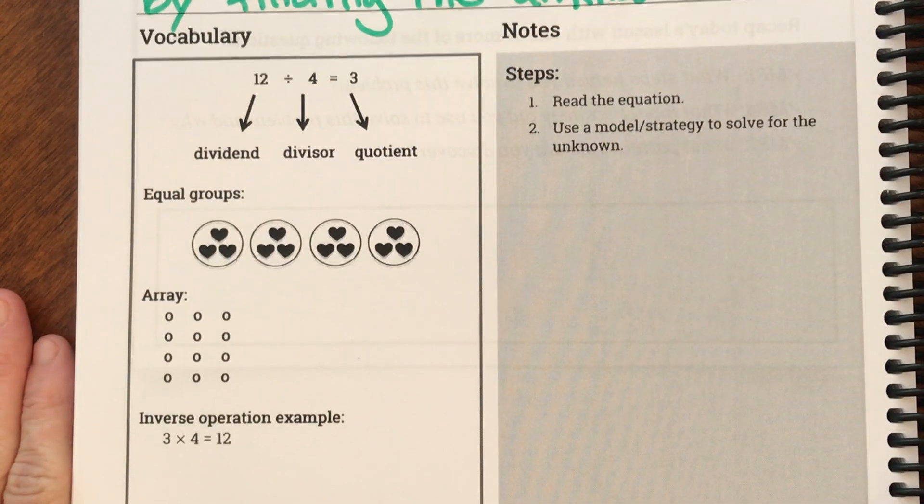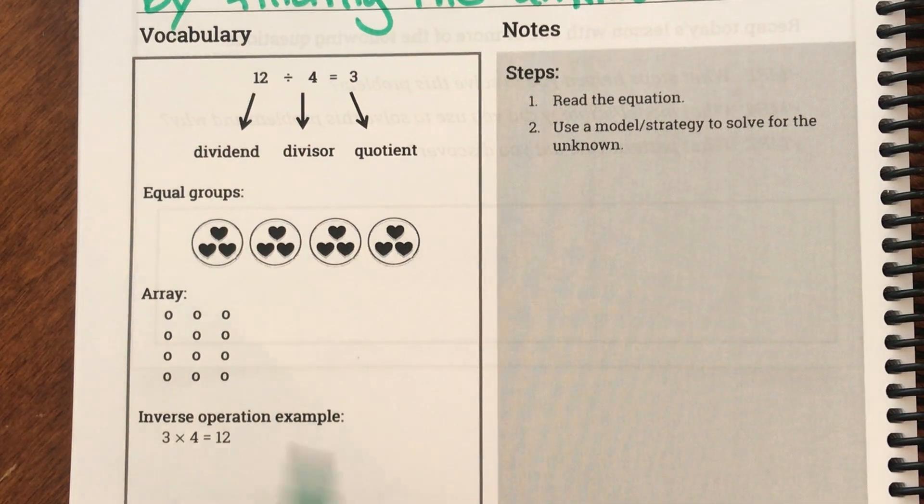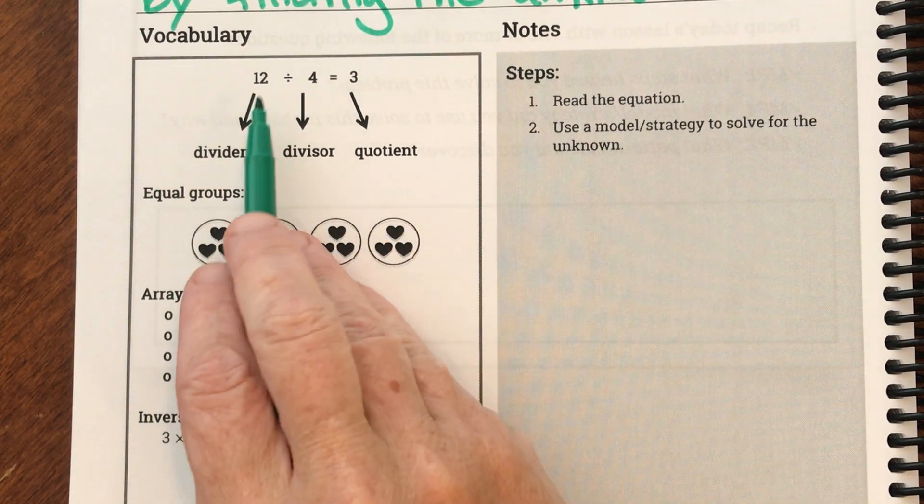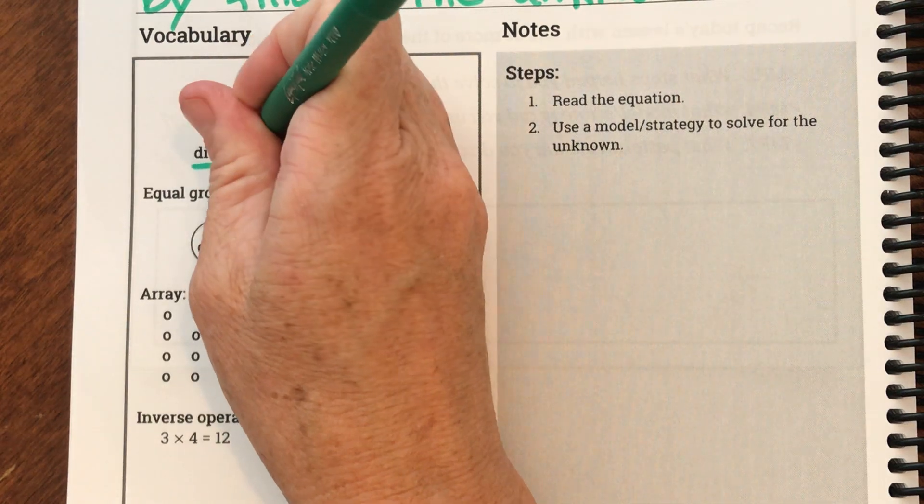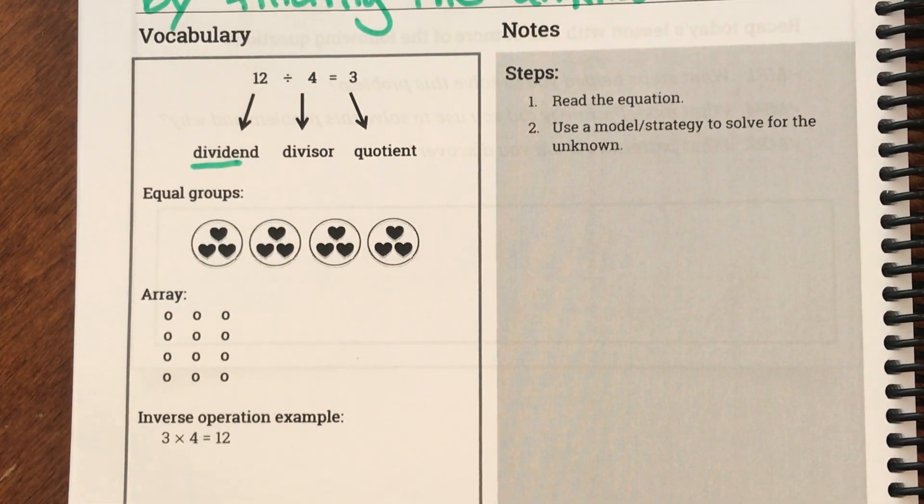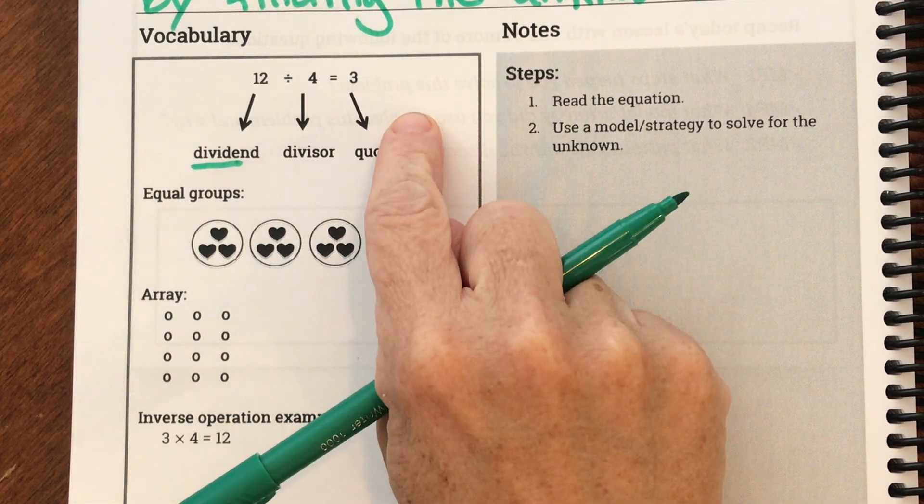Let's look at our vocabulary today. It reminds us about our division vocabulary. Our dividend is what we are going to divide, and then we have a divisor and we have a quotient.